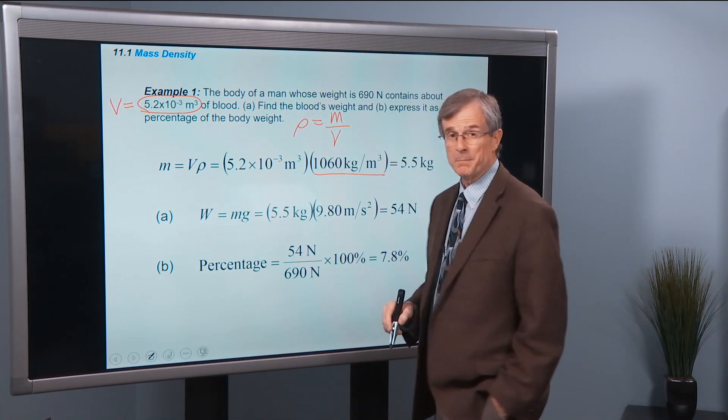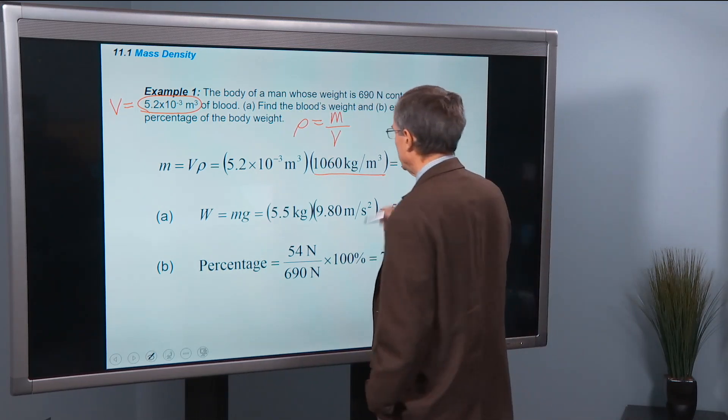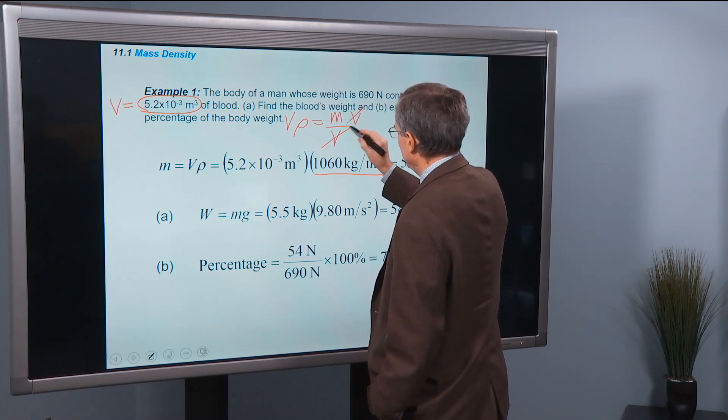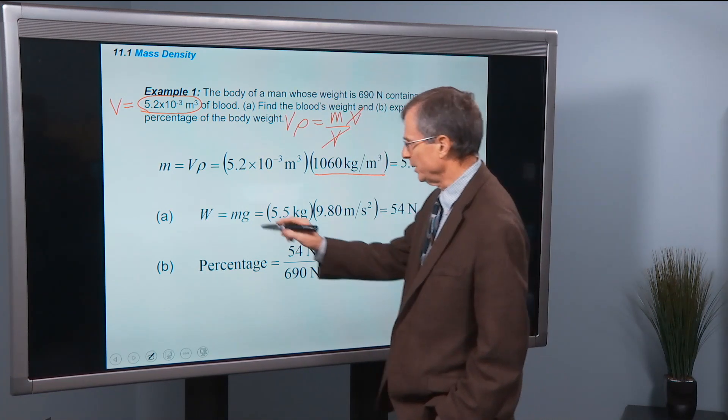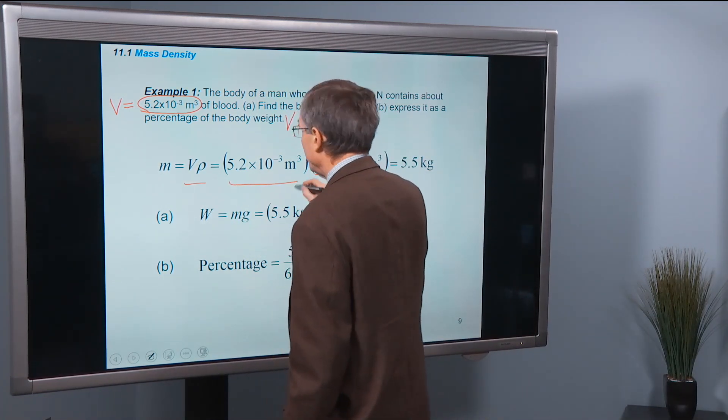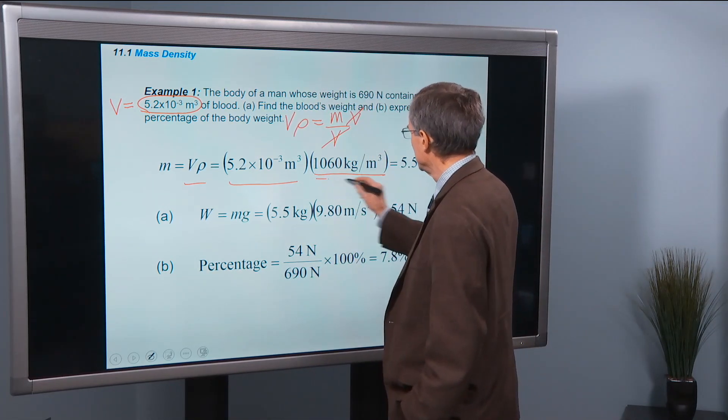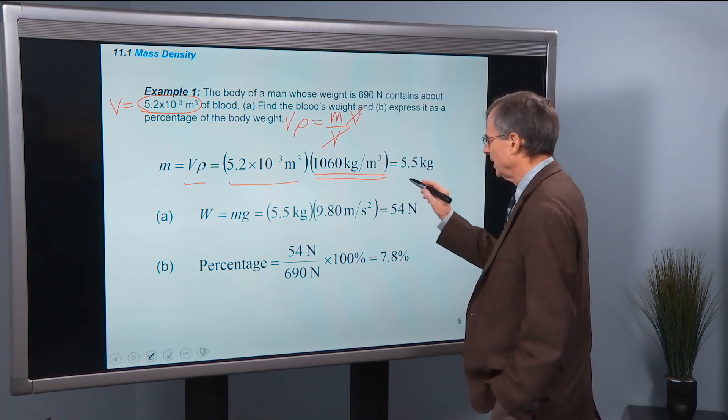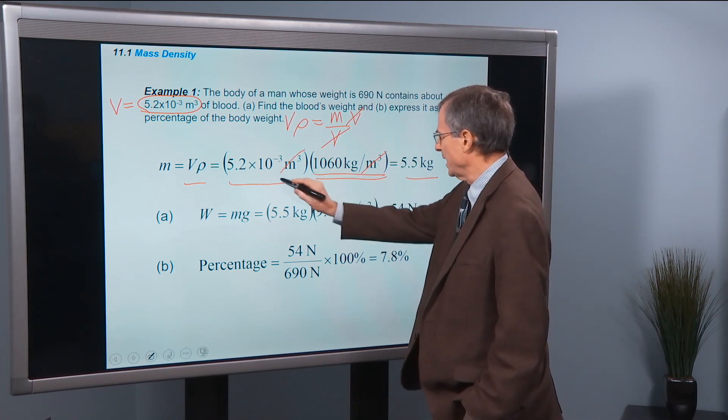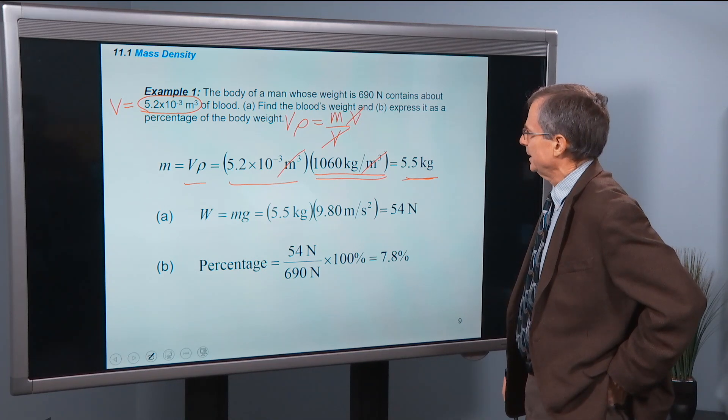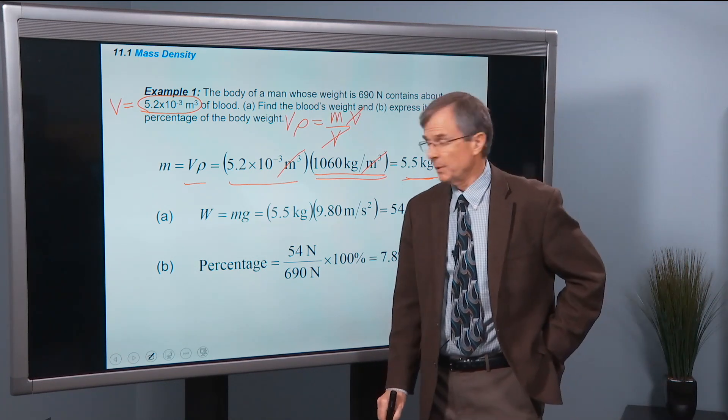And the mass density is mass per unit volume. So if we want the mass, which is what we're looking for, we can multiply both sides by the volume, and get that the mass is the volume times the density. Volume we're given to be 5.2 times 10 to the minus 3 cubic meters. The density we're given, and the cubic meters cancel, and we get about 5.5 kilograms of blood in the body.